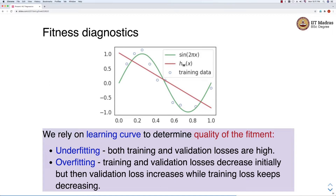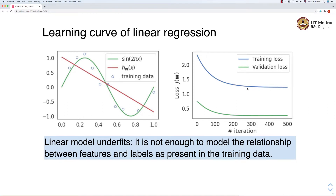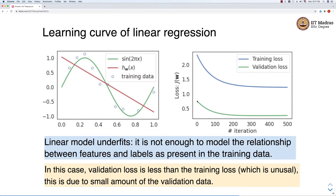There are two situations. When the model is underfitting, both training and validation losses are high. When the model is overfitting, training and validation losses decrease initially and then the validation loss increases while the training loss keeps decreasing. In case of the sample data, you can see that both training and validation losses are high, meaning the model is underfitting. There is an unusual observation that the validation loss is less than the training loss, but this happens because we have a very small amount of validation data.